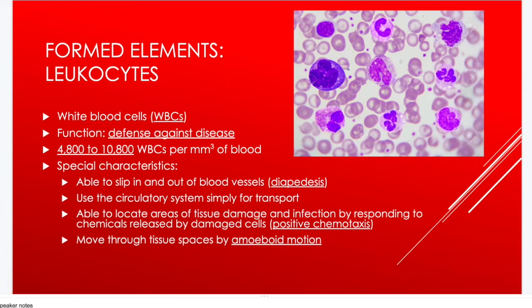White blood cells function to defend against disease. Per cubic millimeter of blood, there should be between 4,800 and 10,800 WBCs. One unique characteristic is diapedesis, which allows white blood cells to move out of the bloodstream through blood vessel walls into surrounding tissues. They use the circulatory system for transport to wherever they need to fight infection.